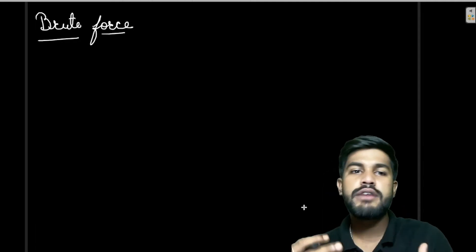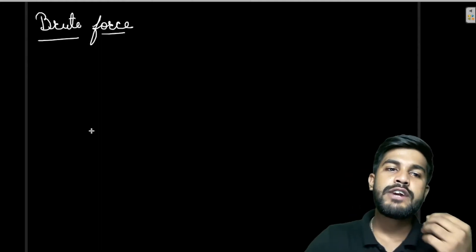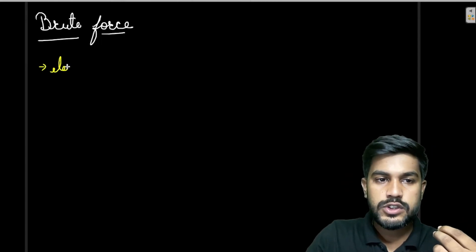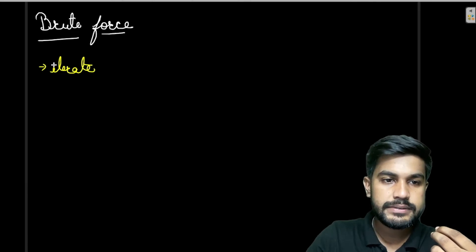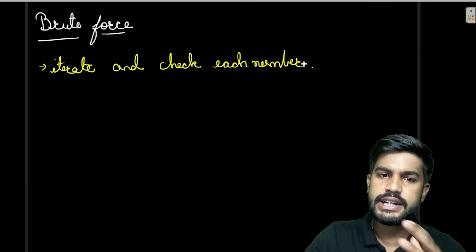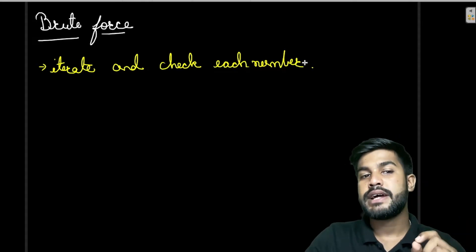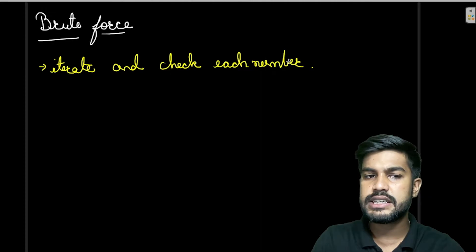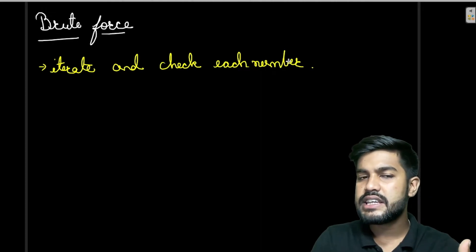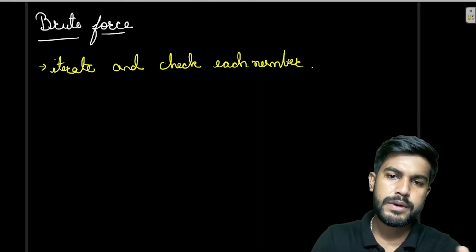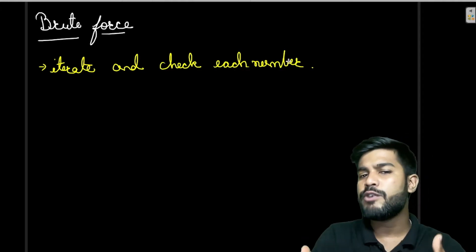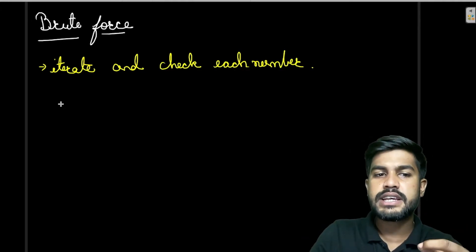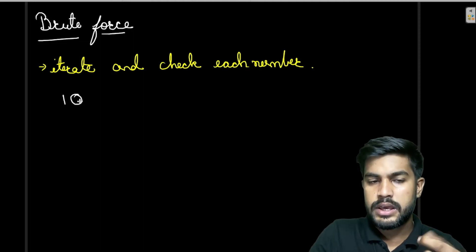The most simple approach we can move forward with is to iterate and check each number. We would simply iterate and check each number. The problem is: how would we check each number? Iterating is easy using a loop, but checking each number — how would we do that?